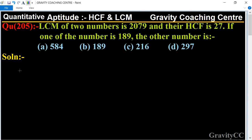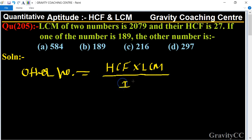So here the other number equals product of HCF and LCM divided by one of the numbers. So here we write the first number. According to the question, HCF is 27 and LCM is 2079 upon one of the number is